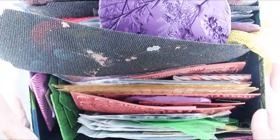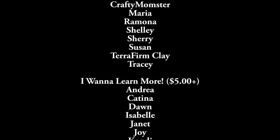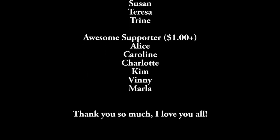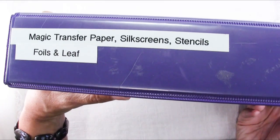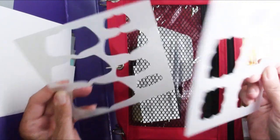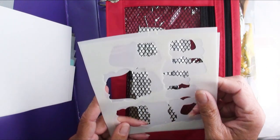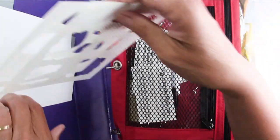What I think I'm going to focus on mostly is my binder system. Now you all had asked to see my binder system for other things, so this seems like a good time to show it to you. Here is my binder for magic transfer paper, silkscreens and stencils and recently I added foils and leaf, although it's starting to get a little outgrown. And as you collect things you'll find you'll have to adapt.